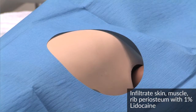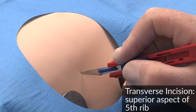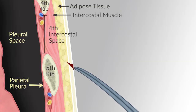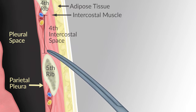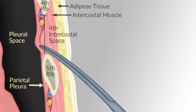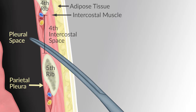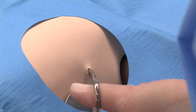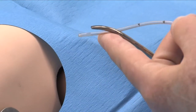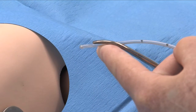Aspirate during insertion to be sure you are not in a blood vessel. Make a small transverse incision of 0.5 centimeters over the superior aspect of the fifth rib. Dissect the tissue with the Kelly clamp, tunneling to the fourth intercostal space. Close the Kelly clamp and apply pressure over the superior aspect of the fifth rib until the clamp punctures through the muscle and parietal pleura — appreciate a sudden loss of resistance. Enlarge the pleural opening by spreading the Kelly clamp open, then remove the Kelly clamp. Attach the Kelly clamp to the distal end of the chest tube, allowing the chest tube to extend just beyond the tip of the clamp. Trocar should not be used.